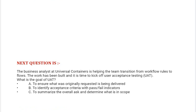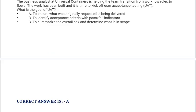Next question: The business analyst at Universal Containers is helping the team transition from workflow rules to flows. The work has been built and it is time to kick off user acceptance testing UAT. What is the goal of UAT? Option A: To ensure that what was originally requested is being delivered. Option B: To identify acceptance criteria with pass-fail indicators. Option C: To summarize the overall ask and determine what is in scope. Correct answer is Option A.